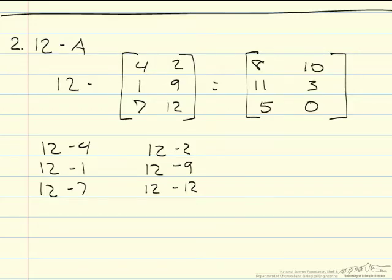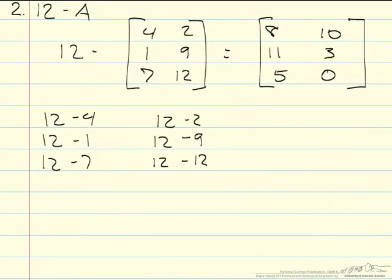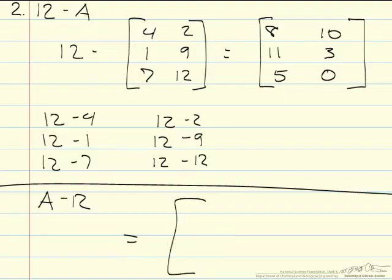However, with the addition problem, if this had been written 4.5 plus A, you would have ended up with the exact same answer. But the second problem, if it was instead written A minus 12, your answer would have been the complete opposite, everything negative.